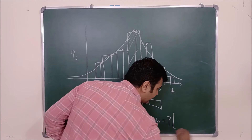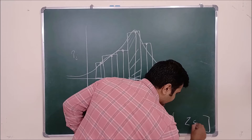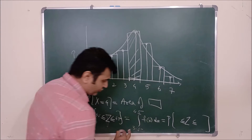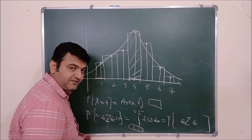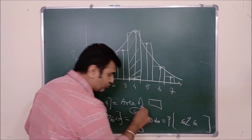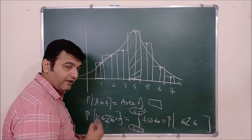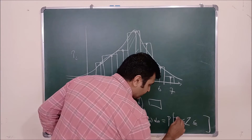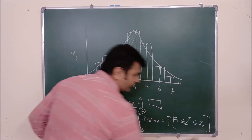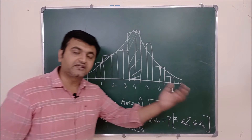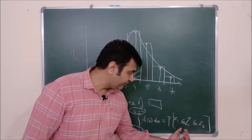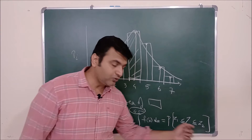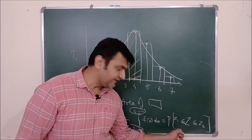This is nothing but the probability of Z taking a value from Z1 to Z2. You find the Z1 score and the Z2 score. How do you find the Z score? X minus mu upon sigma. So for 3.5 you have Z1 and for 4.5 you have Z2. Then you go to the standard normal distribution table and find: probability(Z ≤ Z2) minus probability(Z ≤ Z1).